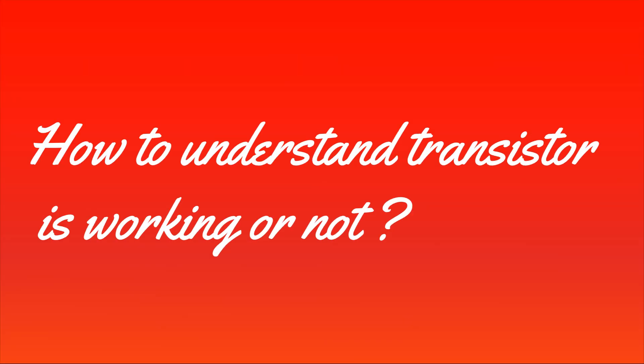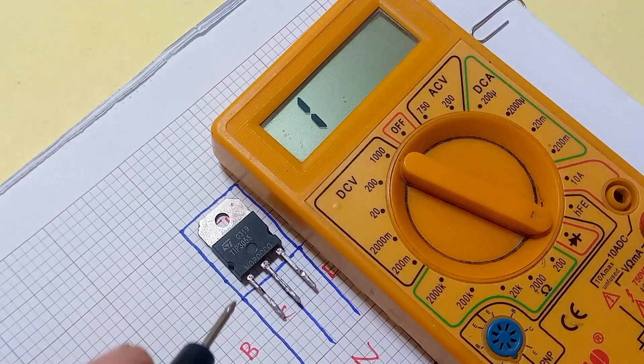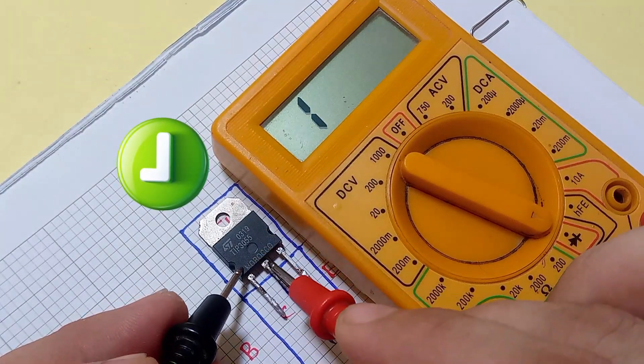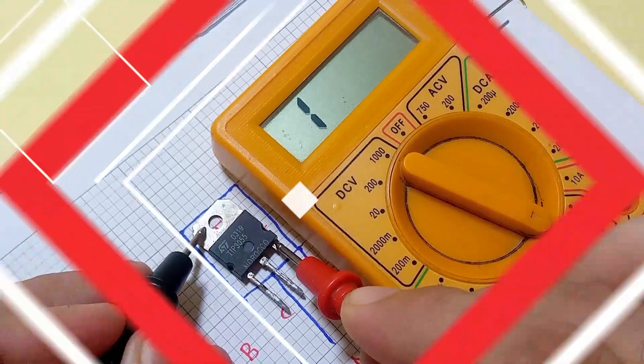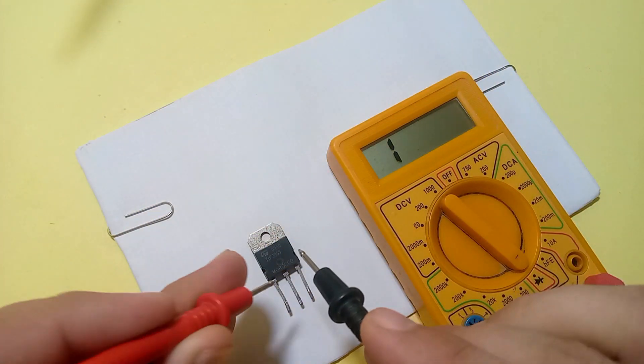Now move towards the next question: how do we understand whether the transistor is working or not? Look, if we change the polarity for the right type of transistor, it shows no reading on the multimeter.